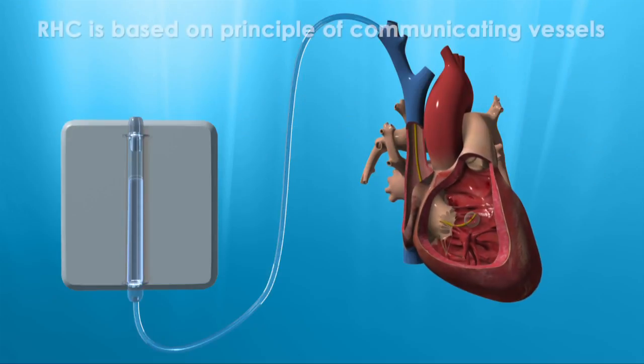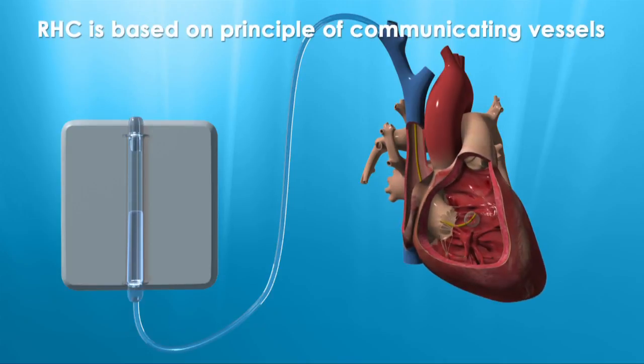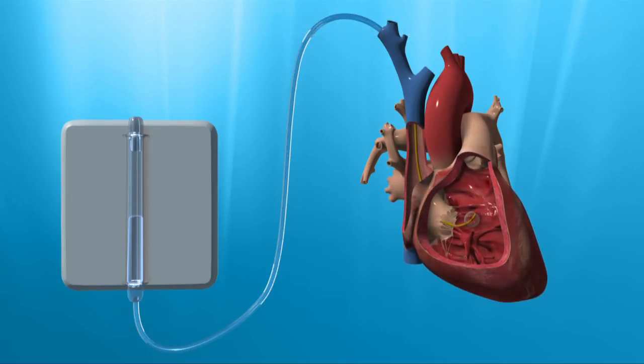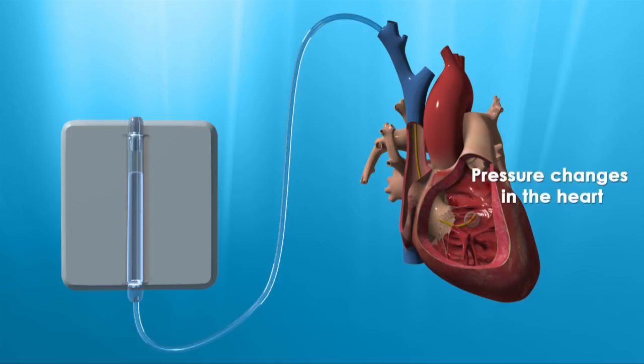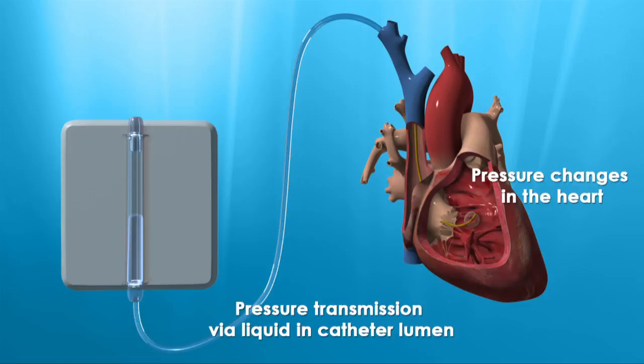Its workings are based on the principle of communicating vessels. The rhythmical changes of the blood pressure values in the heart are transmitted via the liquid inside the lumen of the catheter to a measuring device outside the body.